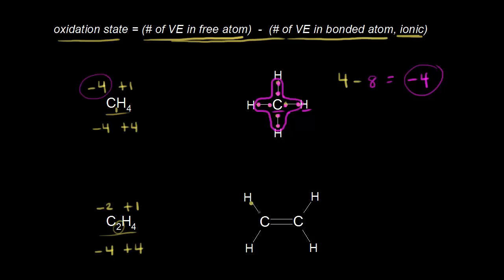Let's verify that using the dot structure. We put in our bonding electrons and pick the carbon on the right. Carbon is more electronegative than hydrogen, so carbon steals those electrons from each C–H bond. For the double bond between the two carbons, we have four electrons and both carbons have the same electronegativity, so we divide those electrons equally — two electrons to each carbon.